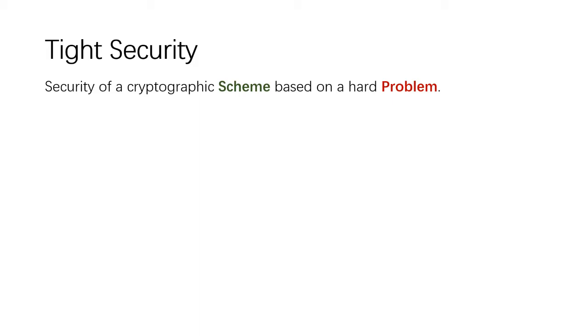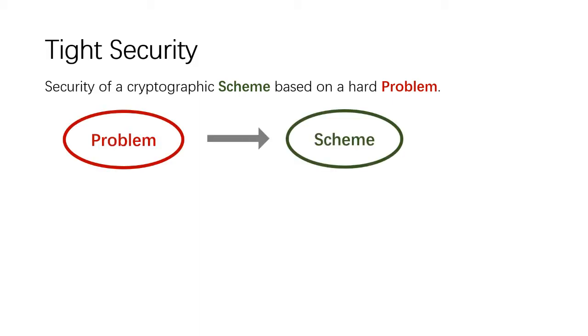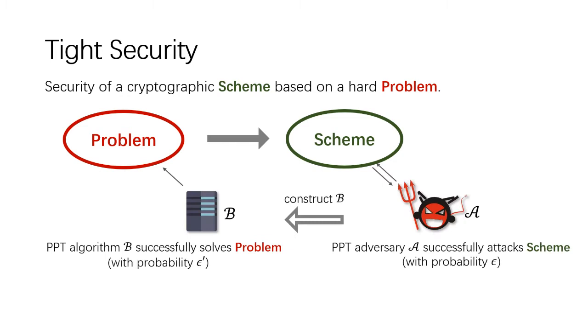Usually, in provable security, we construct a cryptographic scheme based on a hard problem. Once there exists an adversary A that successfully attacks the scheme with probability epsilon, we can construct another algorithm B that uses A's ability to solve the problem with success probability epsilon prime. Here B and A have roughly the same running time. Since we assume that the problem is hard, namely there is no efficient algorithm to solve it, hence such adversary A does not exist. We define L equals epsilon over epsilon prime, the security loss factor in the reduction.